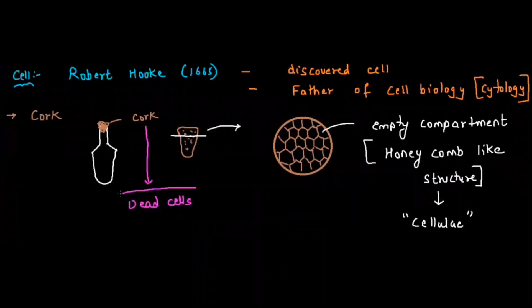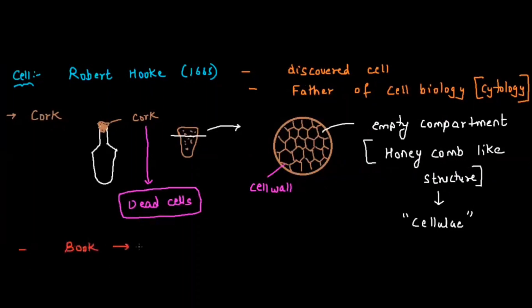The problem was Robert Hooke observed cork, which was actually dead cells, so he observed empty compartments. He mentioned everything about his experiment in a book called Micrographia. In that book he stated that cells are nothing but empty compartments with lots of space. Later on, it was proved that cells are not empty.